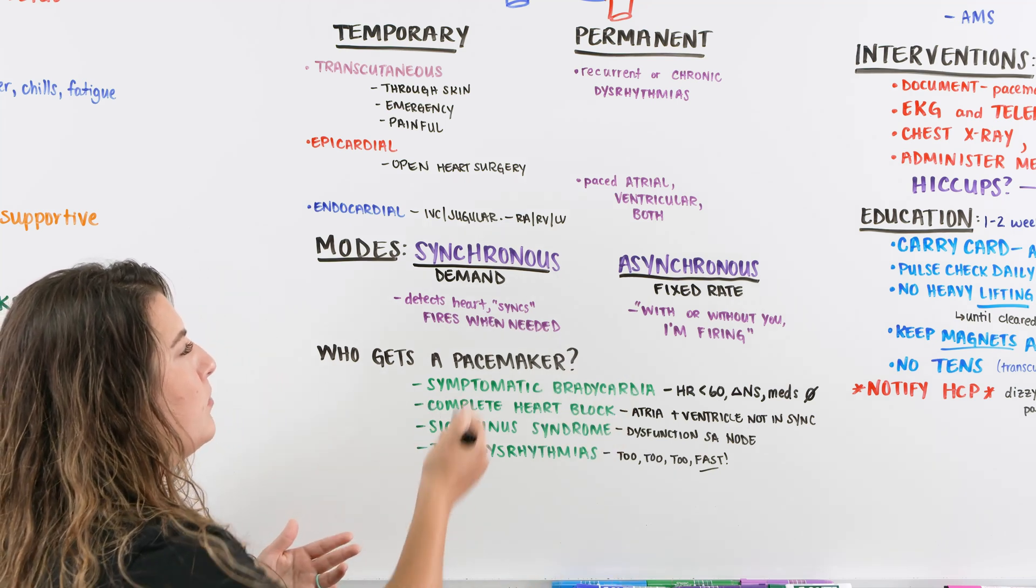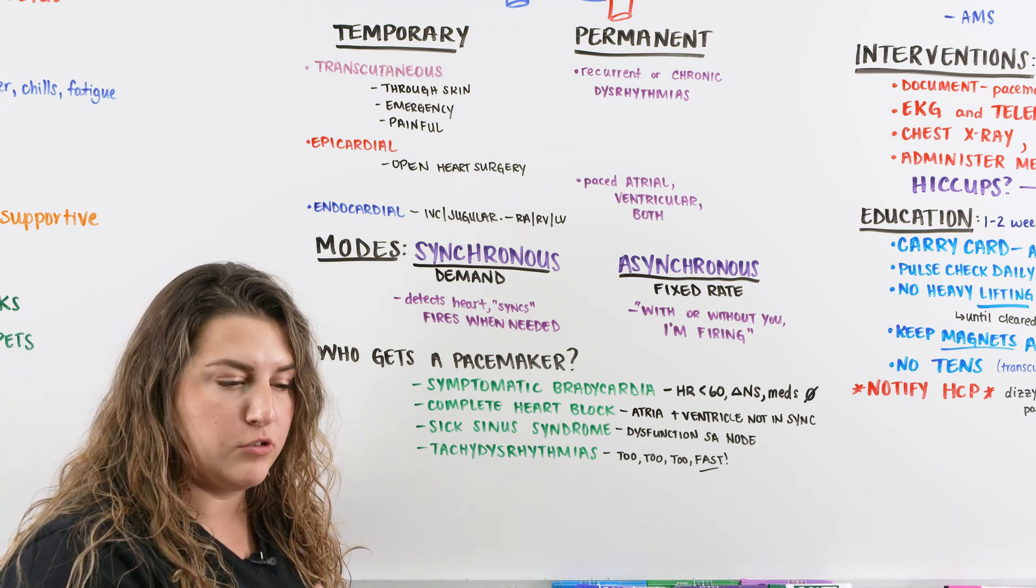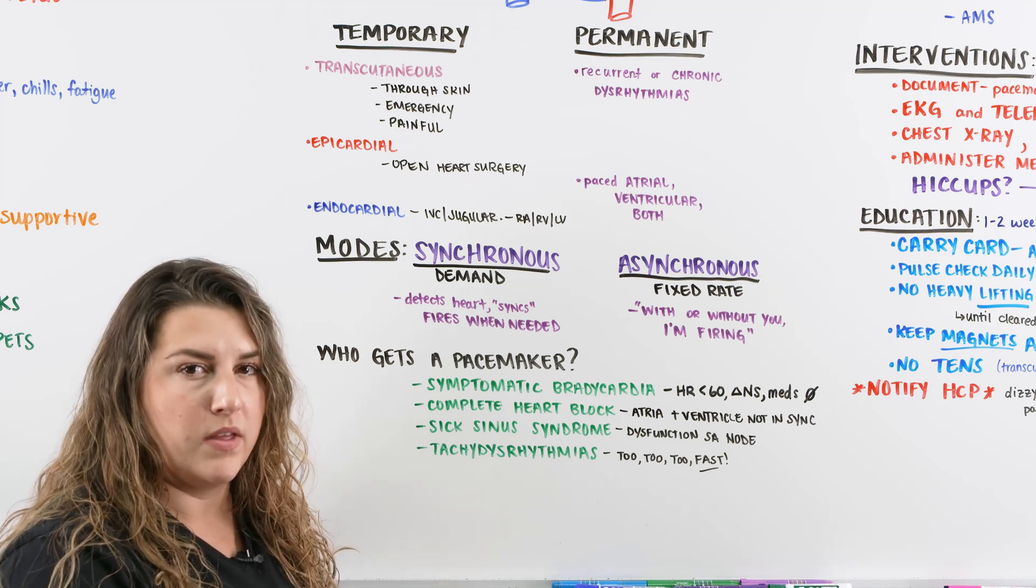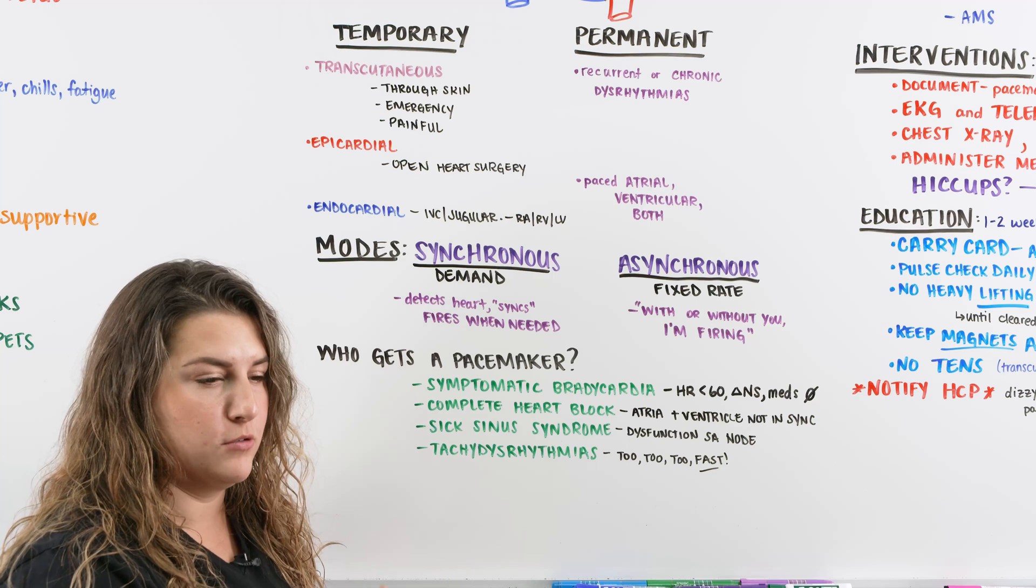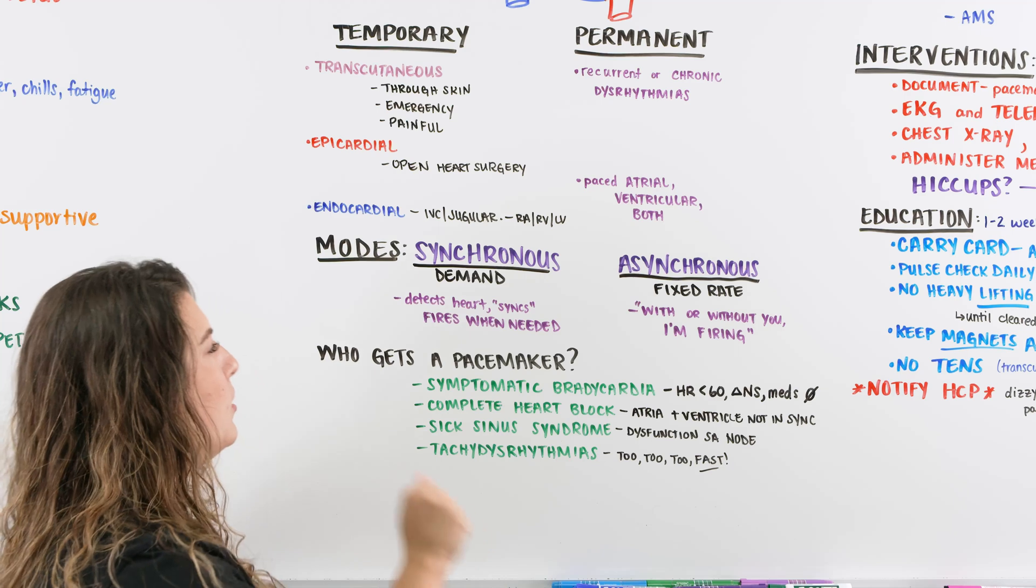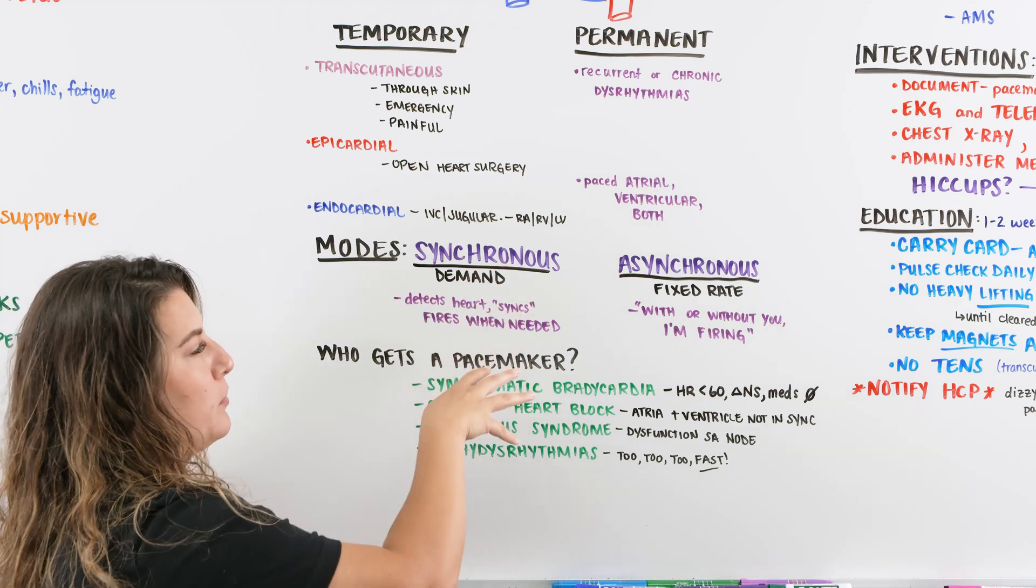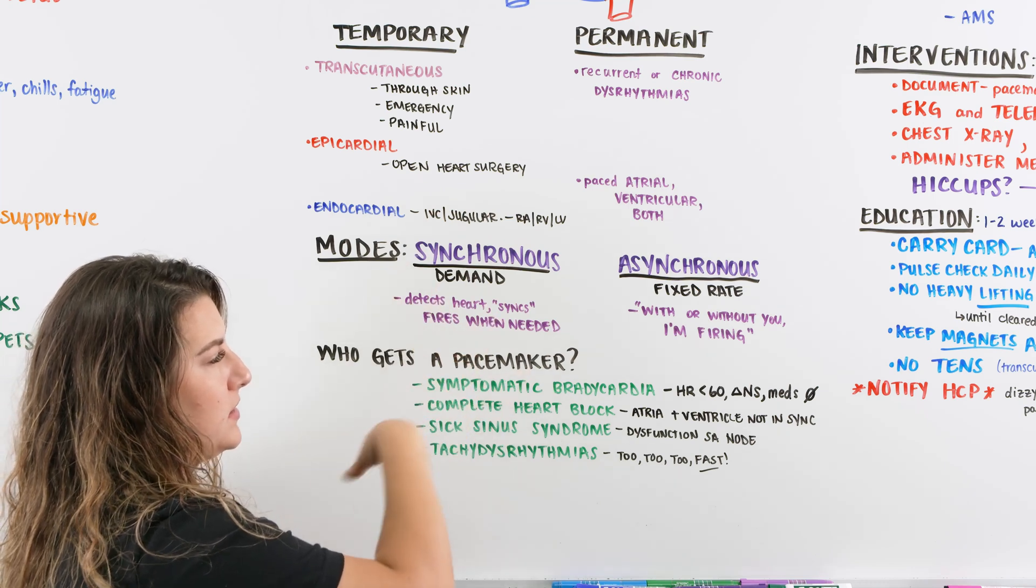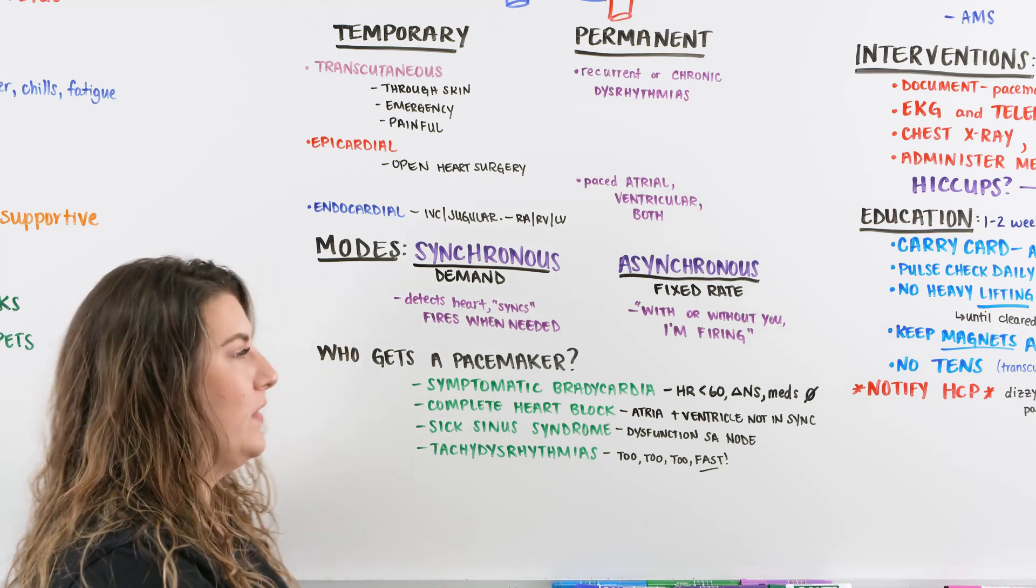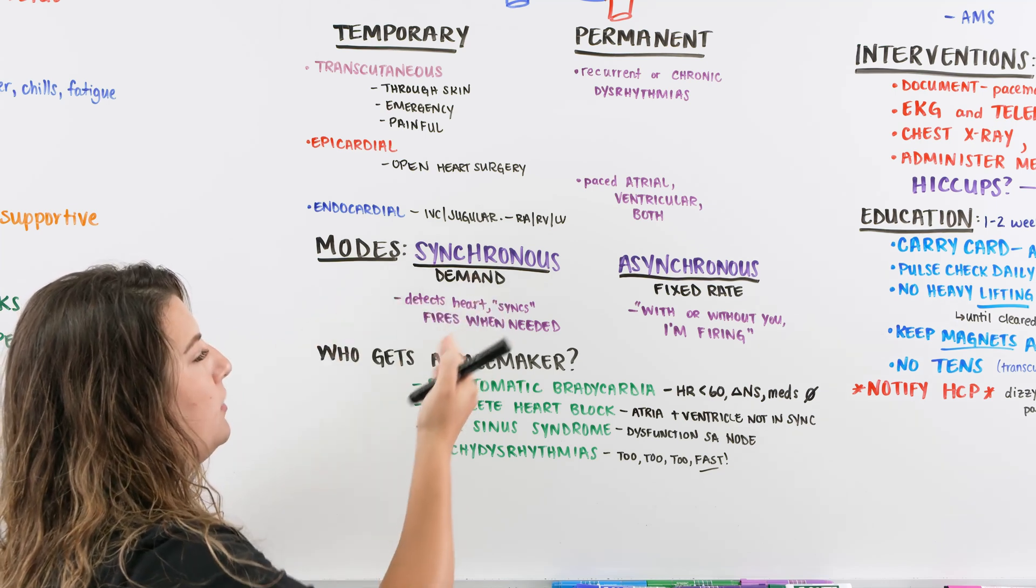The mode synchronous is also known as the demand mode. That means the heart is going to beat at its own rhythm and when it drops a beat or drops lower than it needs to, that's when the pacemaker is going to demand the heartbeat. It's going to send those impulses. When the heart is not working like it should or it drops below its rate that it needs to, it's going to detect the heart and say, you're not doing what you need to do, so I'm going to step in and fire some electrical currents to help conduct the heart and conduct the pace.